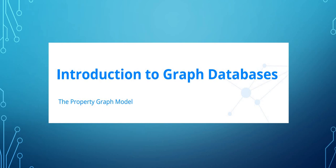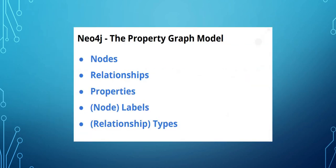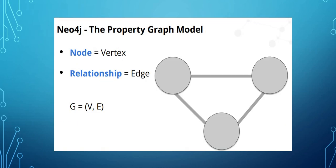Hi guys, welcome to the Light Up Skill. In the last video we saw the introduction to graph databases — nodes, relationships, properties, labels attached to nodes, and types attached to relationships. We saw how to denote what is a node and what is a relationship. This is part two of the introduction to the graph model.